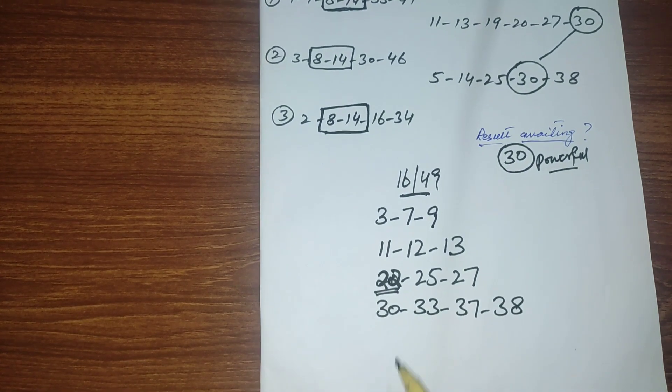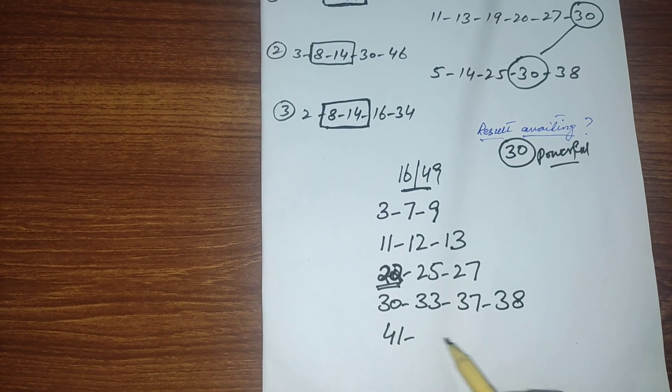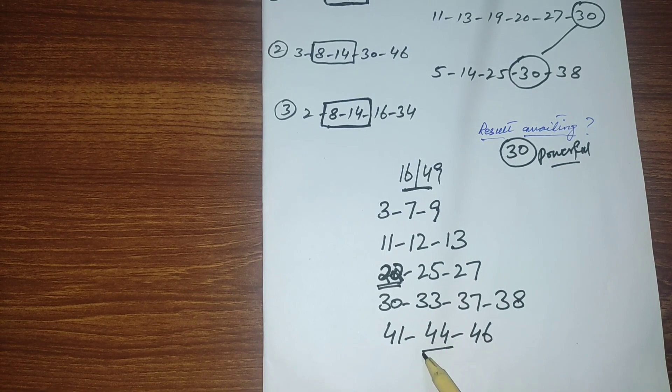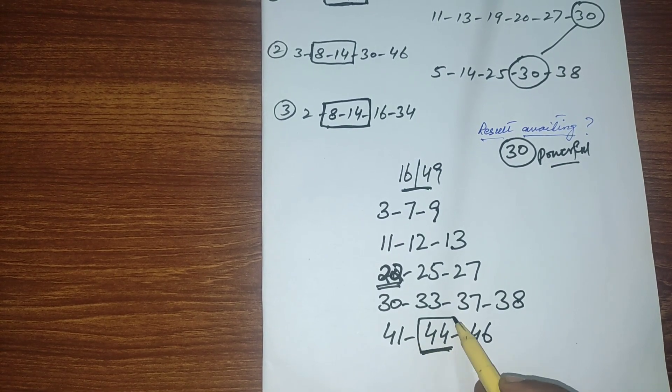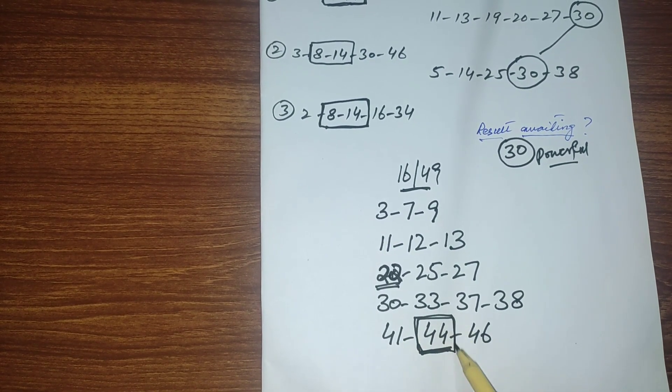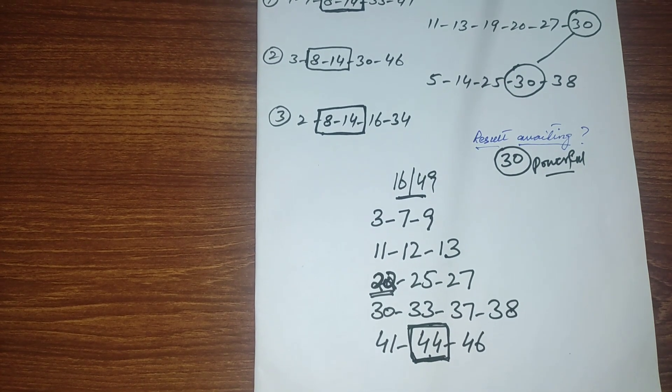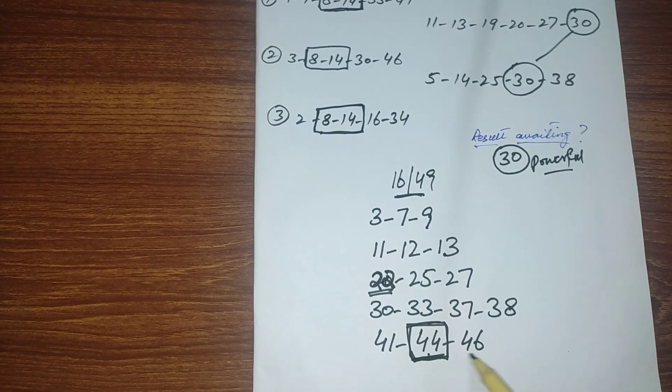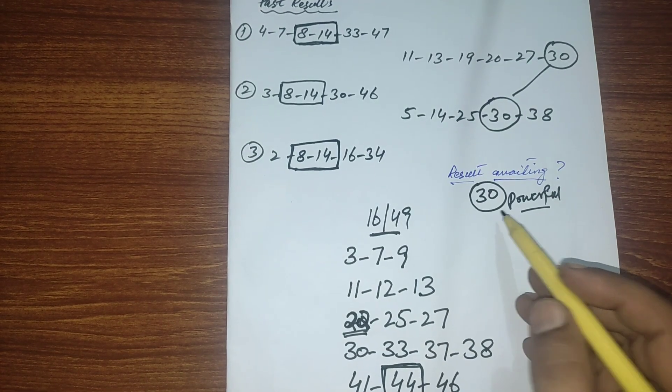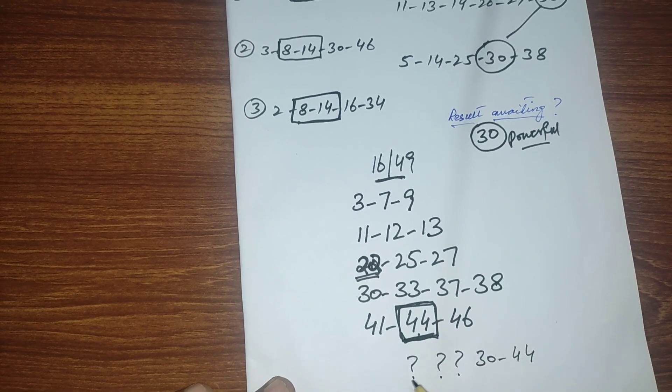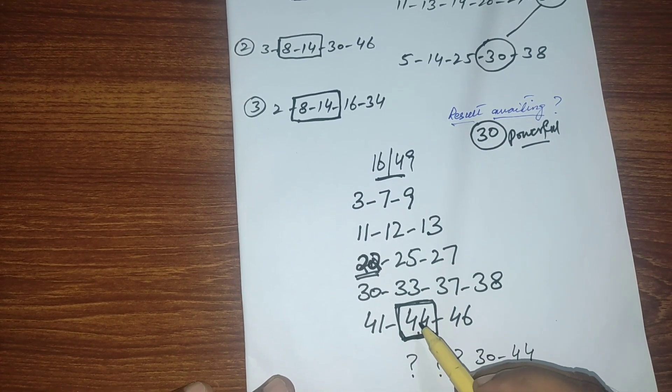From 40 to 49 I have 3 numbers: 41, 44 and 46. These numbers I already gave you in my previous video. 44 and 30 are the best numbers for this draw. You should must select one number from here and the number 30. You can select 30 and 44 and 3 other numbers from here.